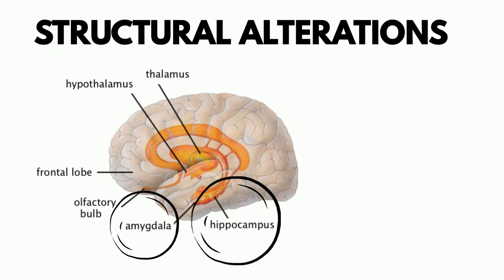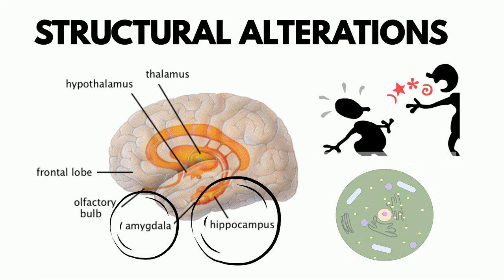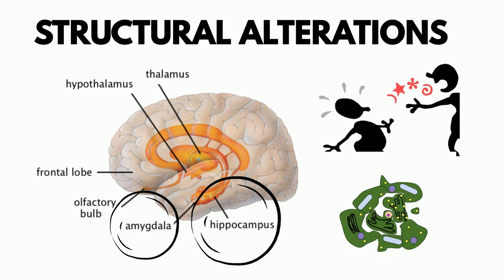In terms of structural alterations, one study found that individuals with DID had reduced volumes in the amygdala and hippocampus. The hippocampus is responsible for learning and memory. Smaller volumes may be related to early life trauma, as the hippocampus is sensitive to heightened stress, potentially leading to cell damage in the area.